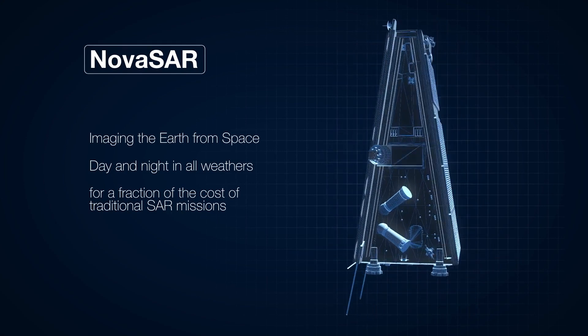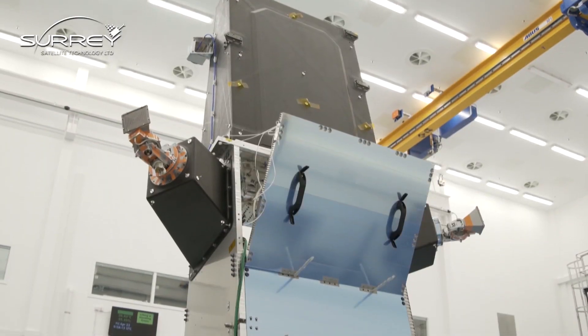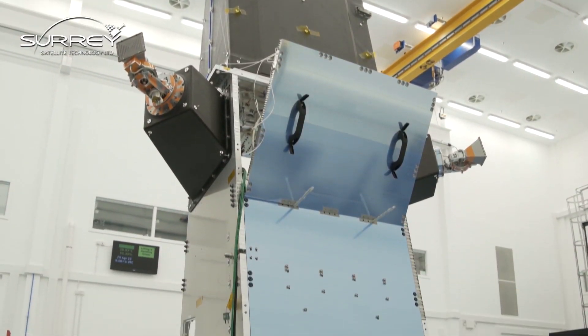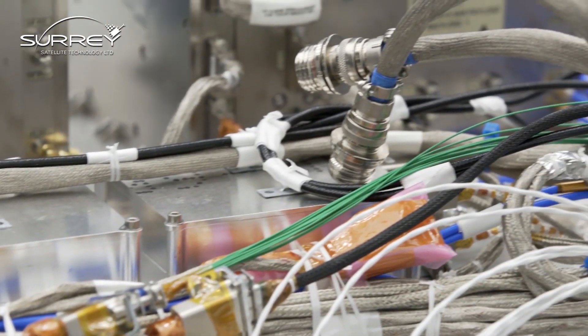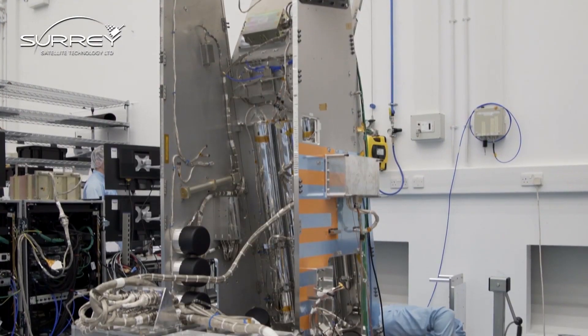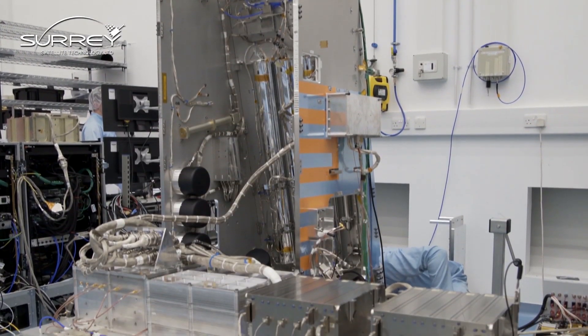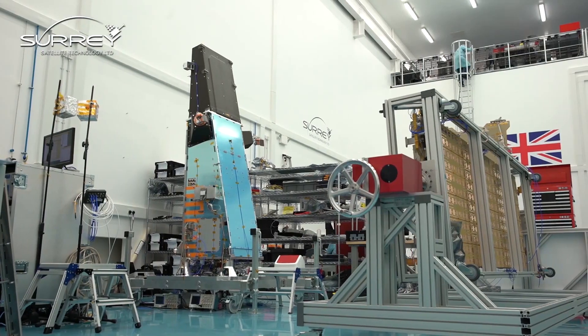Novosar is a new satellite that we've developed for radar monitoring. It's the first radar satellite that we've built and it takes a new approach to radar, combining that with our small satellite approach to bring a new capability for doing radar at a very different price point.